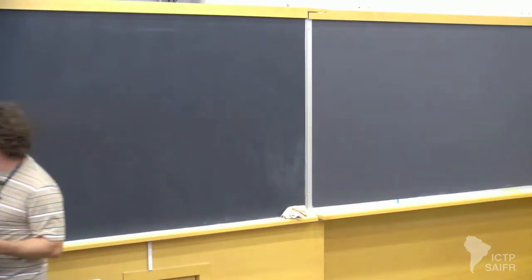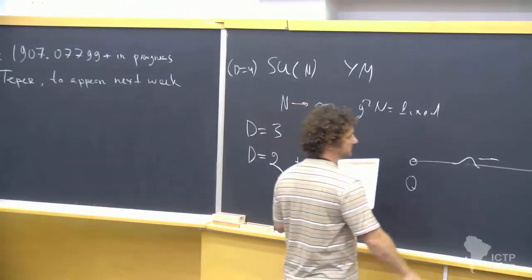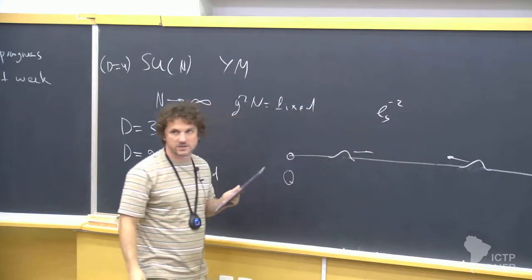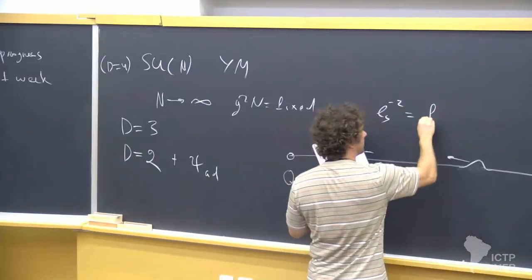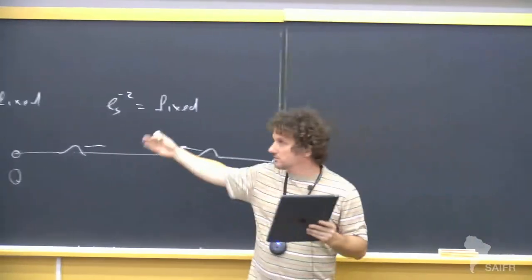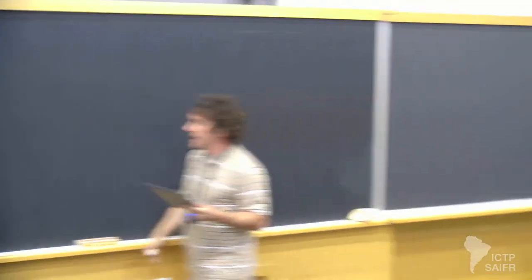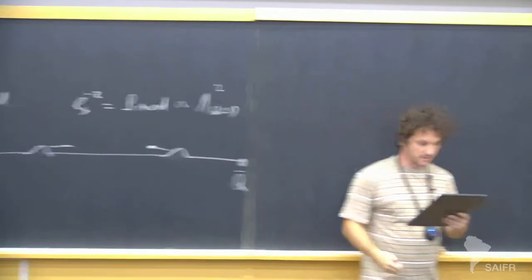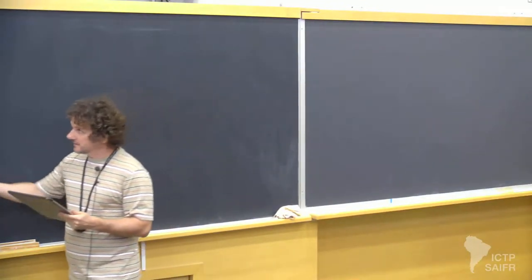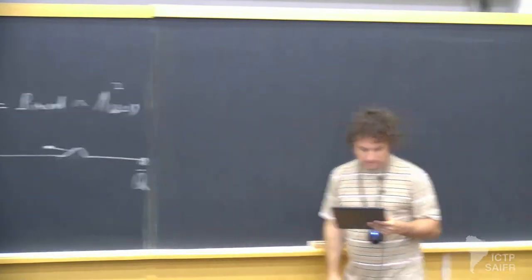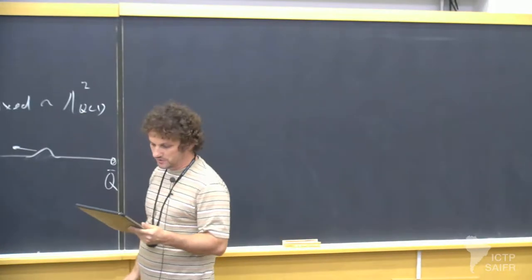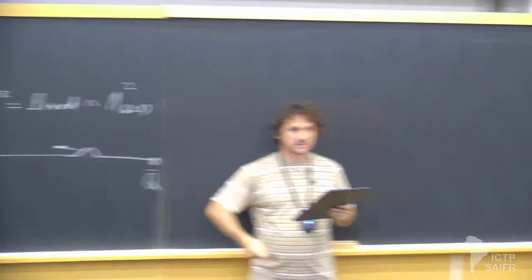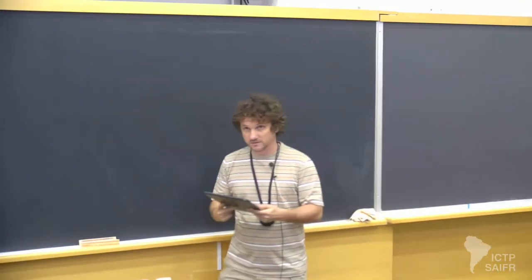At low energies, the dynamics is very much constrained and people will talk later about the effective field theory approach describing excitations as a system of Goldstone bosons. Bootstrap in its current form also fits mostly about low energy dynamics. Instead, the focus of my talk is to say something about the UV. When we take this limit, this is a system of Goldstone bosons with string tension as a parameter — L_s^{-2}. In the large N limit that's kept fixed. So at high energies — above lambda_QCD squared — the theory becomes strongly interacting, as one expects from a gravitational theory.